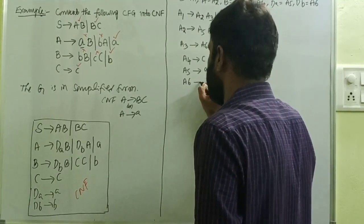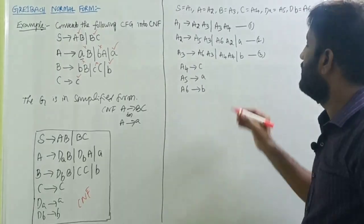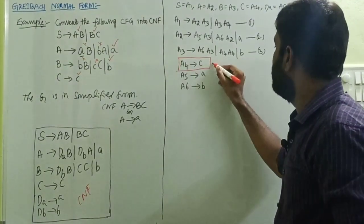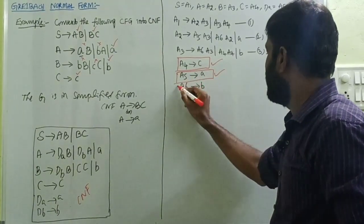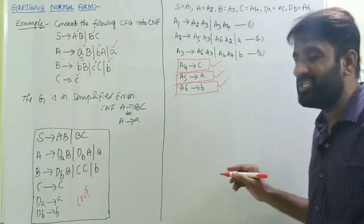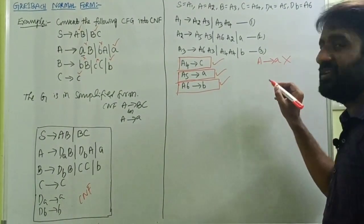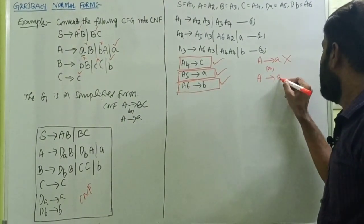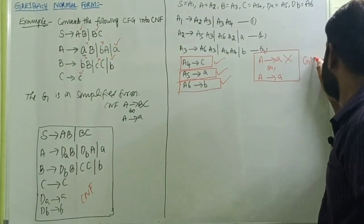Now observe: A4 tends to c is already in Greibach Normal Form. A5 tends to a is already in Greibach Normal Form. A6 tends to b is already in Greibach Normal Form. Greibach Normal Form requires A tends to a followed by any number of non-terminals, or A tends to a (single terminal).